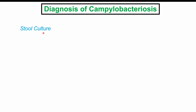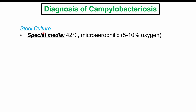Campylobacteriosis is diagnosed by stool culture using special media: a 42-degree Celsius environment — remember, Campylobacter likes hot campfires — and a micro-aerophilic environment with low oxygen levels, usually about 5% to 10% oxygen. Stool PCR can also be performed, which is now a very quick way to diagnose Campylobacter infections. Enzyme immunoassay is another diagnostic option.